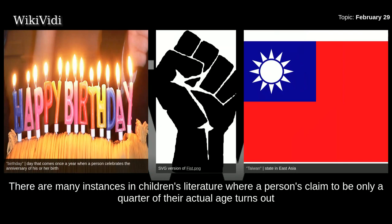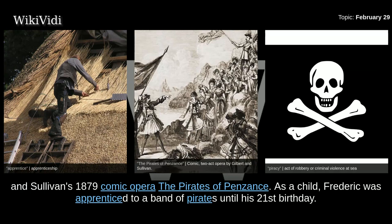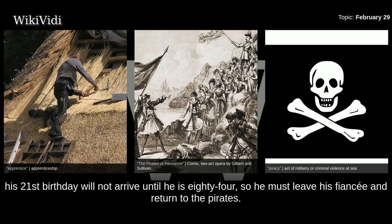There are many instances in children's literature where a person's claim to be only a quarter of their actual age turns out to be based on counting only their leap year birthdays. A similar device is used in the plot of Gilbert and Sullivan's 1879 comic opera The Pirates of Penzance. As a child, Frederic was apprenticed to a band of pirates until his 21st birthday, but since he was born on February 29th, his 21st birthday will not arrive until he is 84, so he must leave his fiancée and return to the pirates.